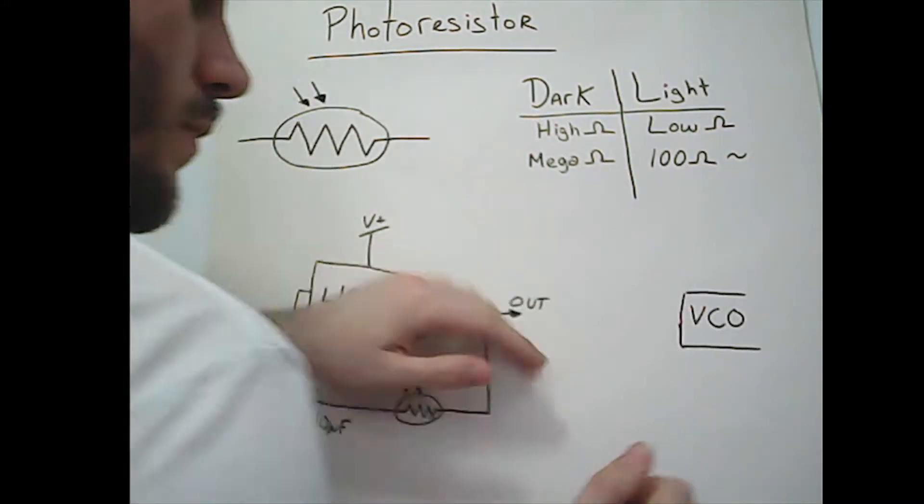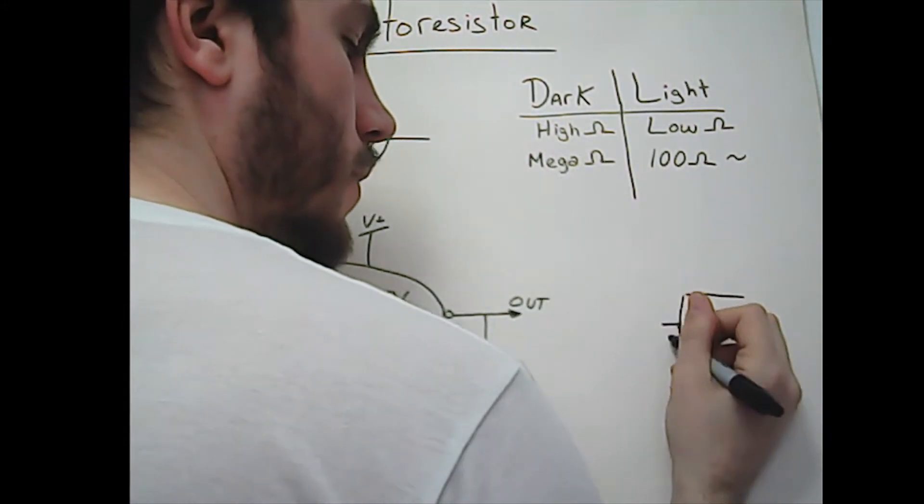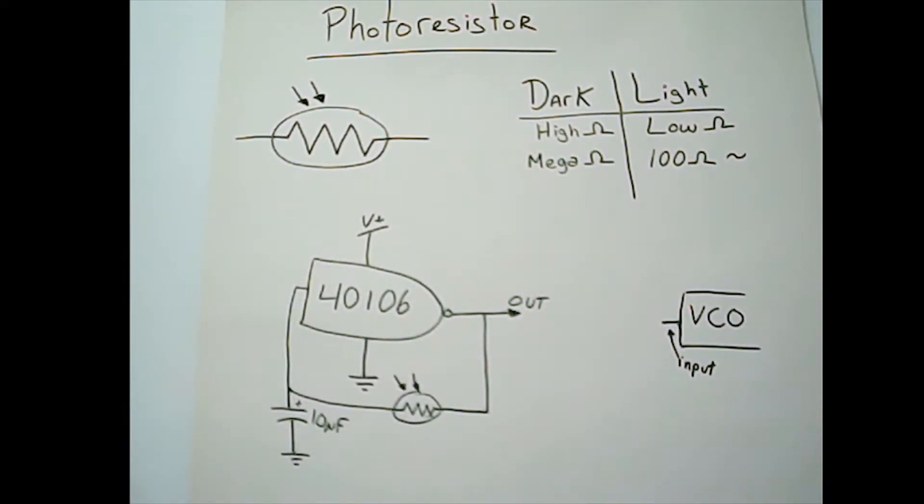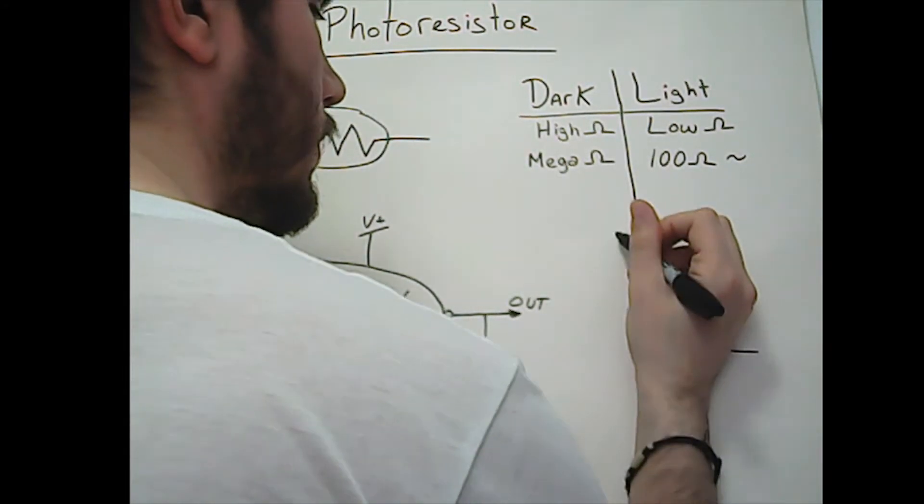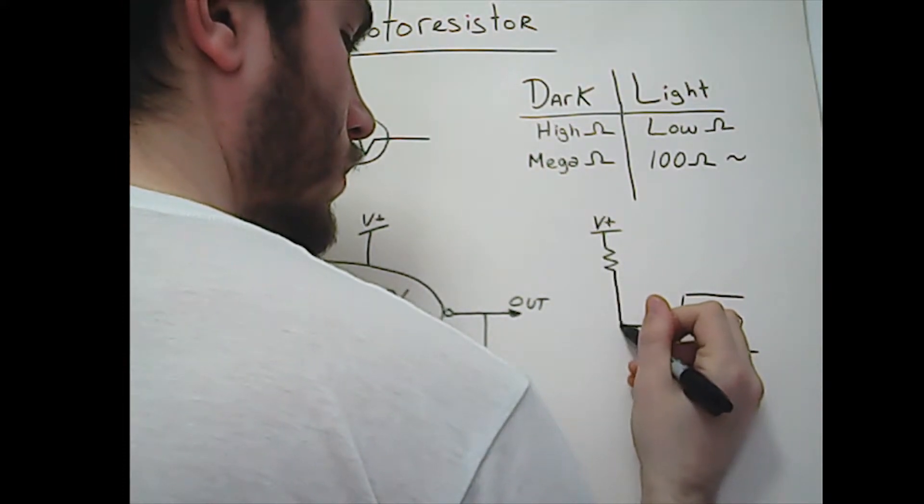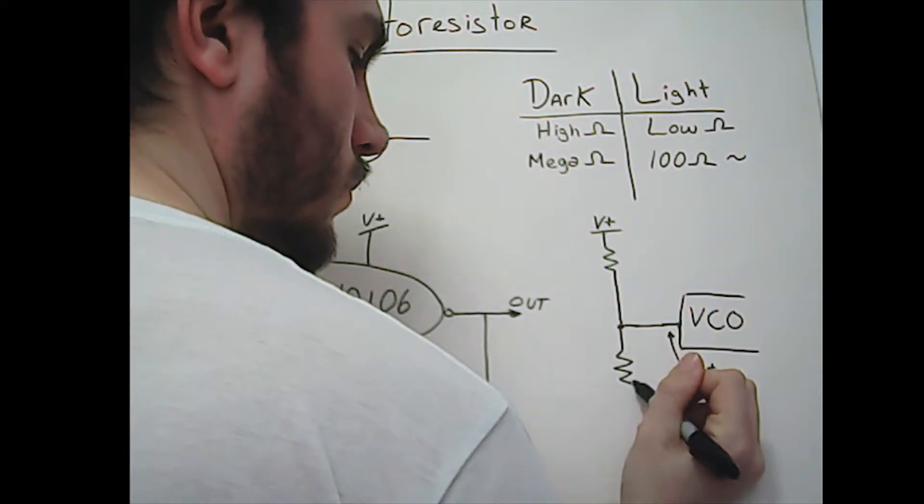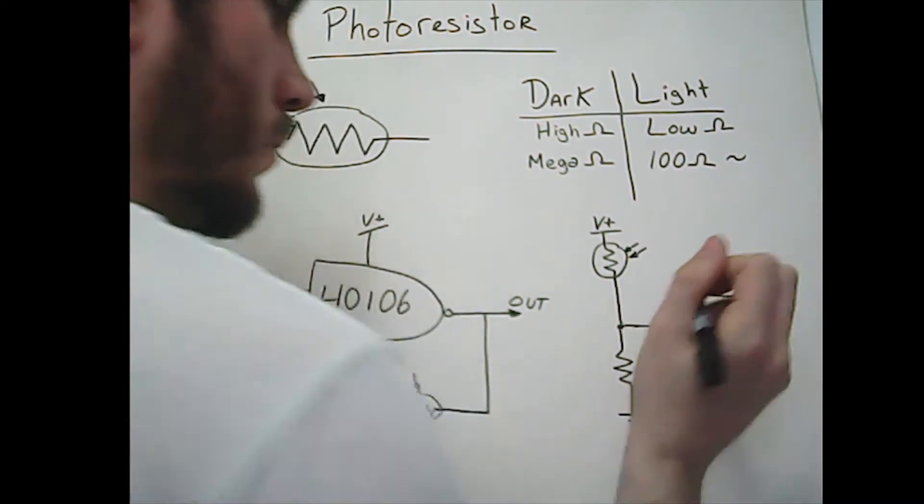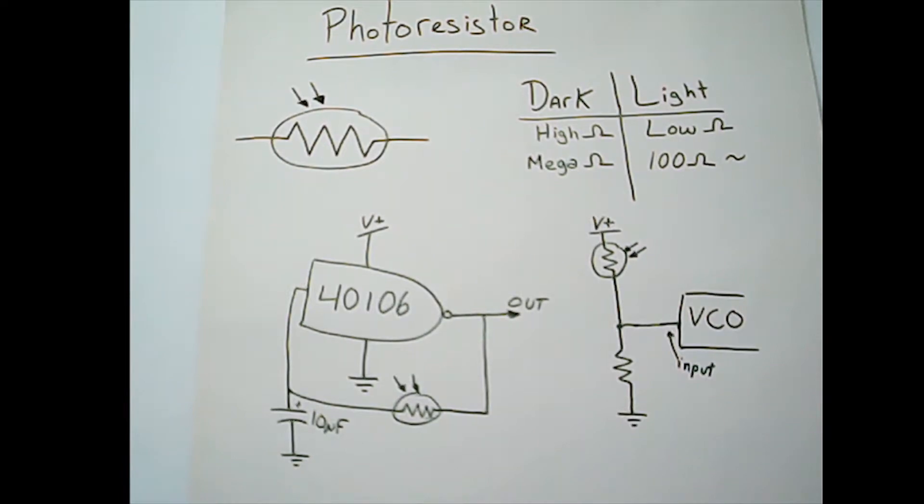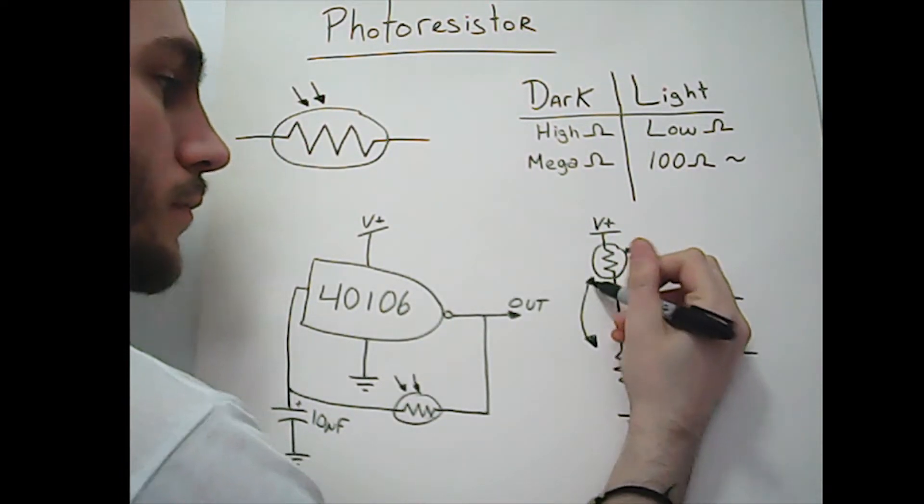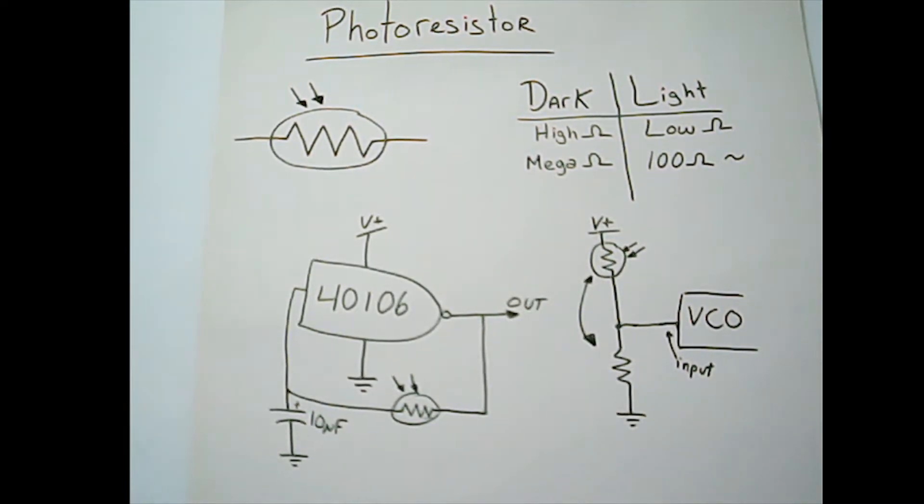Something that we may also do is to control a VCO with a simple voltage divider. Use a photoresistor to divide the voltage at the input of the VCO. The VCO input will be higher when you put the resistor in the dark and will be lower when put in the light. If you want it to work in reverse, you may swap the two resistors, so you will change the configuration of your voltage divider.